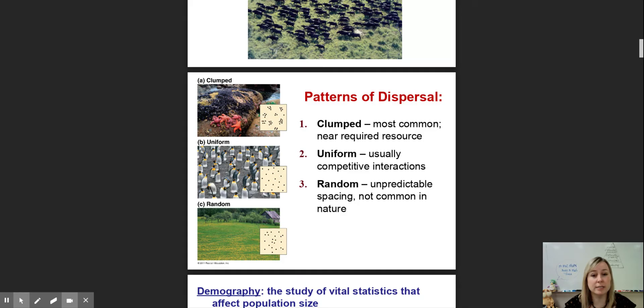Uniform dispersion occurs whenever there's competitive interactions. If you look at the diagram, these penguins are all uniformly dispersed because they are territorial. They have a nesting site and are protecting their egg and nest, so they're evenly spaced.